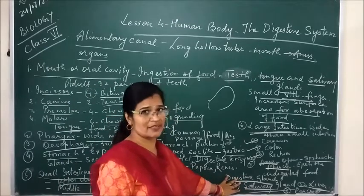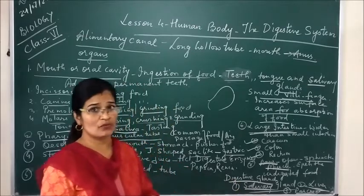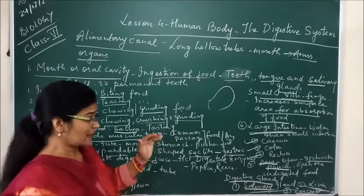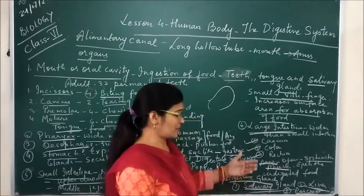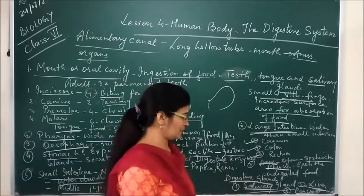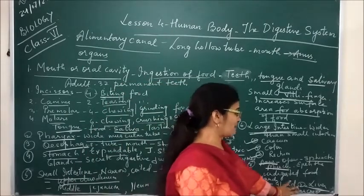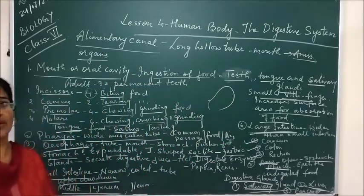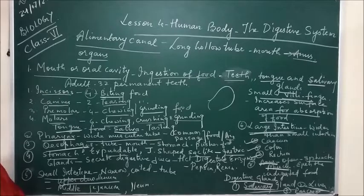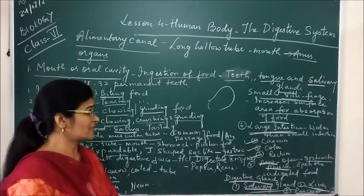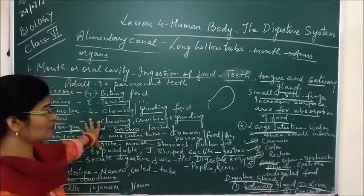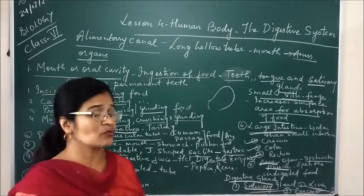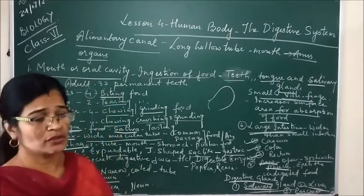The salivary glands contain saliva and the digestion of food starts in the mouth because the mouth contains saliva. The liver is a digestive gland which secretes bile pigments, or bile juice. The pancreas secretes pancreatic juice. You have to draw the diagram of the alimentary canal in your copy, and write and understand the topics written on the blackboard. Whenever I take the Google Meet session I will clear your doubts. Thank you.